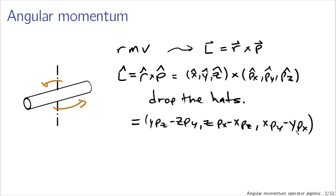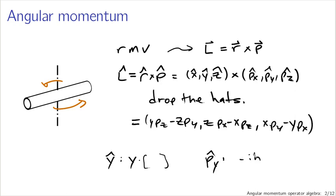These are all operators of the same sort you're familiar with. Y acting on something is just Y, the coordinate, times whatever it's acting on. Likewise, PY-hat is minus i H-bar times the partial derivative with respect to Y of whatever the operator is acting on. So these are the usual operators; we're just combining them in a new way in three dimensions.